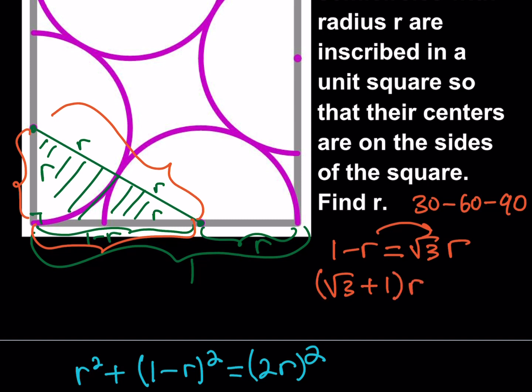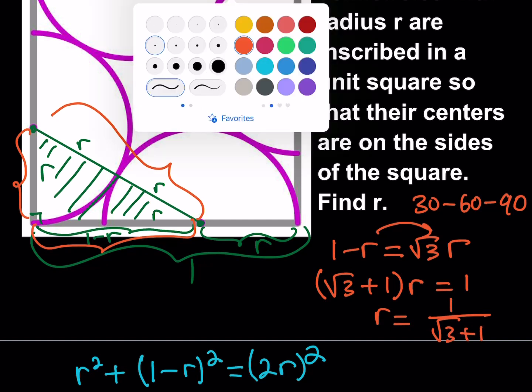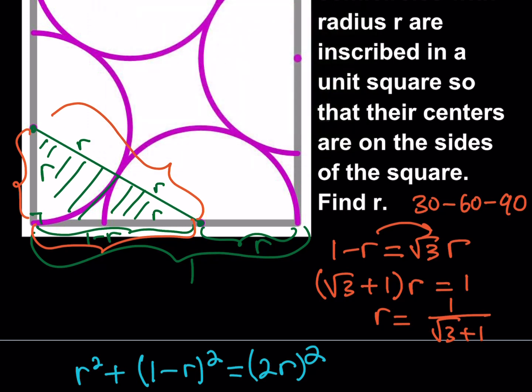This is kind of like a fancy ending because we're going to be rationalizing the denominator here. Divide both sides by √3 + 1 and then of course at this point you would just go ahead and multiply by the conjugate, √3 - 1, top and the bottom.